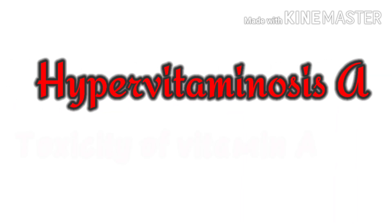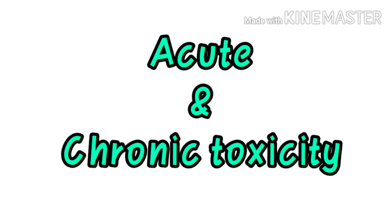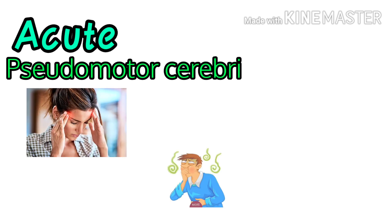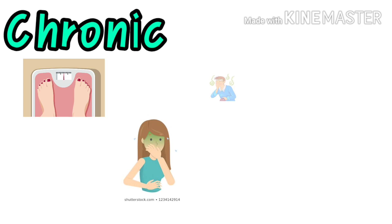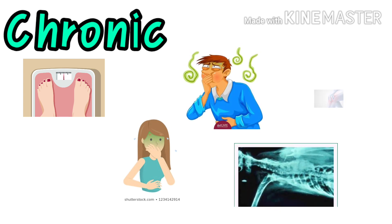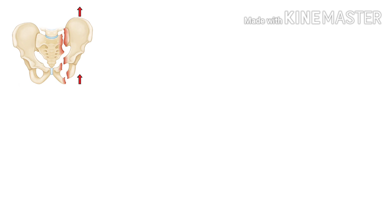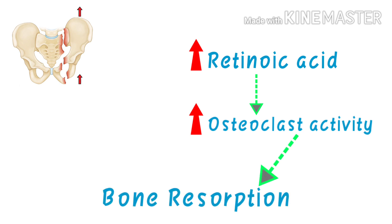Hypervitaminosis A, or toxicity of vitamin A. As mentioned earlier, it is stored inside the body, and excessive intake causes toxicity. Manifestations are acute and chronic. Acute toxicity causes pseudotumor cerebri; symptoms include headache, vomiting, dizziness, and blurring of vision. Another acute manifestation is exfoliative dermatitis. Chronic toxicity leads to weight loss, nausea, vomiting, bony exostoses, joint pain, and fracture of bones — especially the hip bone. The mechanism behind this is that increased retinoic acid increases osteoclast activity, causing bone resorption and loss of bone strength.